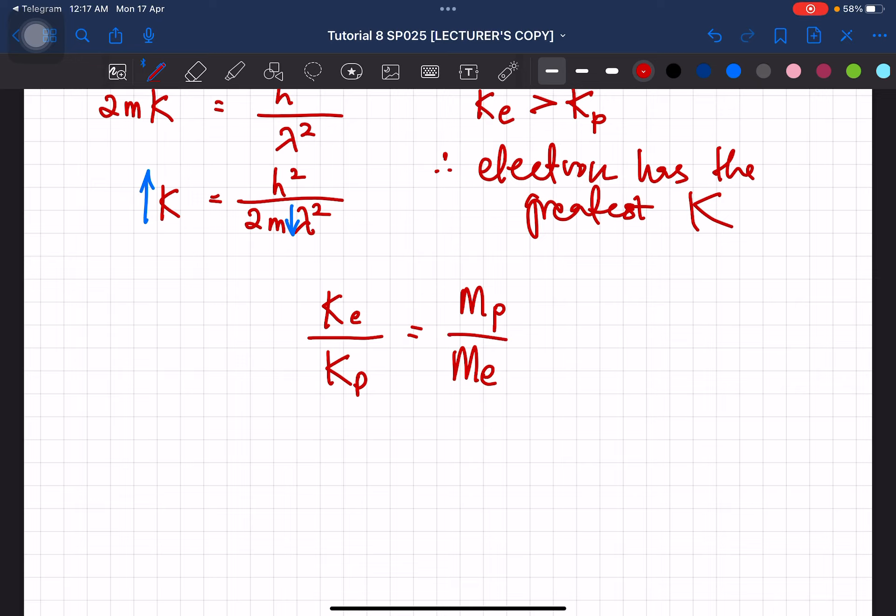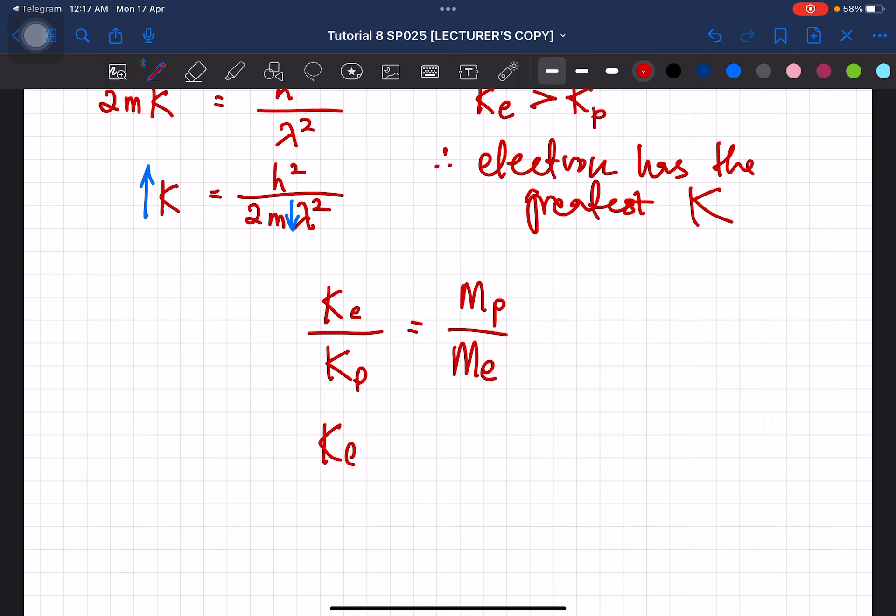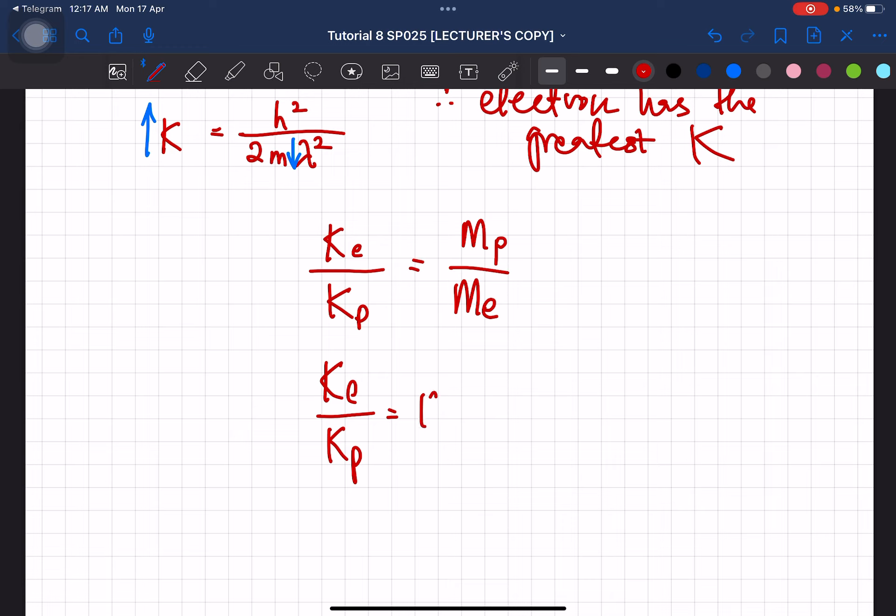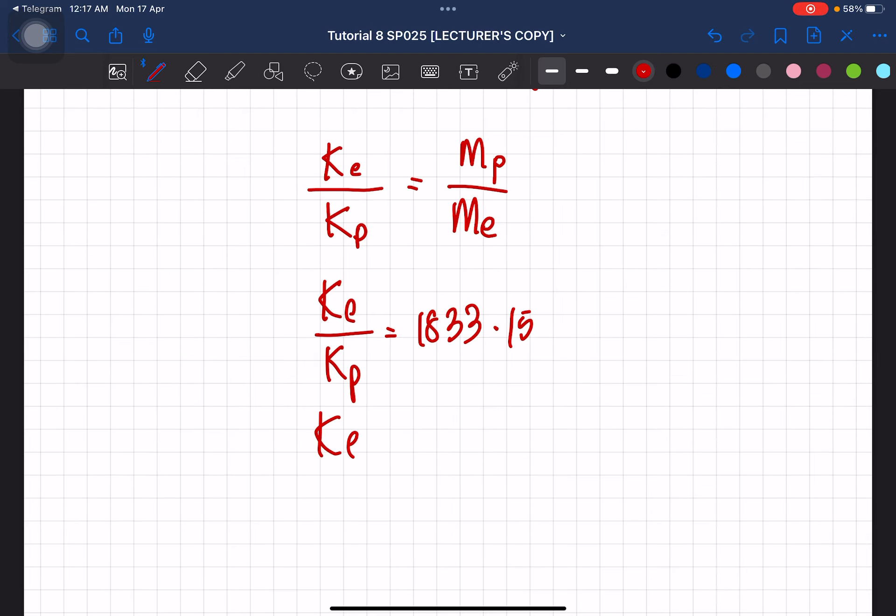Okay, so if you do that, you'll then get the ratio of the kinetic energy. So let me just do that quickly. Mass of proton is 1.67 negative 27 divided by 9.11 negative 31. So you'll get 1833.15 meaning to say, the kinetic energy of electron is 1,833.15 greater than the kinetic energy of proton.